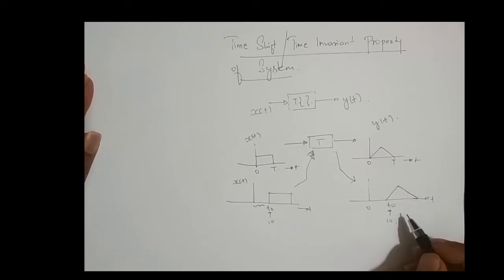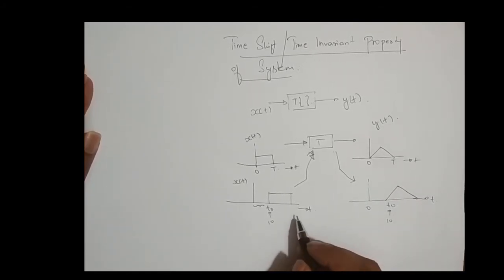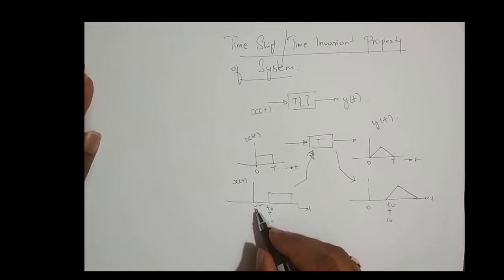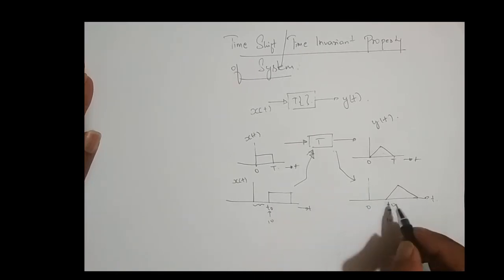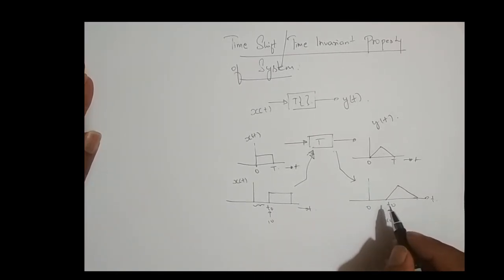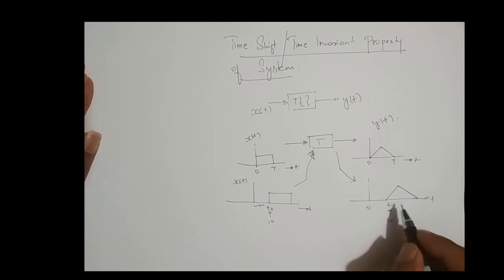So let me define it again. For every shifted version of the input signal should result in a corresponding shift in the output signal, then the system is called a time invariant system.